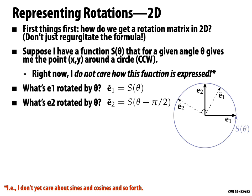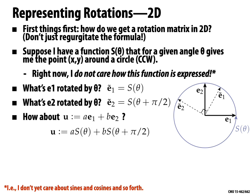More generally, if we take a vector U = aE1 + bE2 — just any vector with coordinates a and b — how do we write an expression for that vector rotated by θ? Rotation is a linear transformation, and U is expressed as a linear combination of E1 and E2, which we know how to rotate by θ. So we can write the rotated vector as a·S(θ) + b·S(θ + π/2).